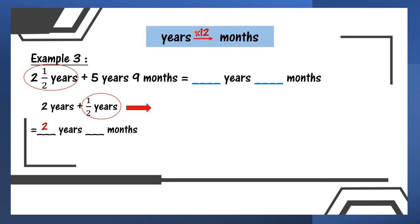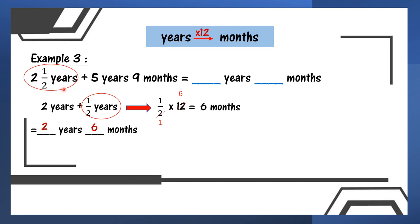So if convert to months, we need to times 12. So 1/2 times 12 — I can simplify: 2 and 12 we can divide by 2. 2 divided by 2 is 1, 12 divided by 2 is 6. And then 1 times 6, I will get 6 months. So I already convert: 2 and 1/2 years is now 2 years 6 months.